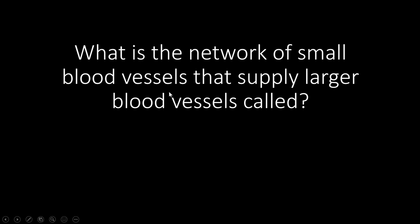What is the network of small blood vessels that supply larger vessels called? Sometimes blood vessels are so big that the tissue surrounding them is too thick for nutrients to diffuse through — it needs its own vessels. That's mainly in places like your heart. Those are called vasa vasorum — meaning 'vessel of vessels' — because some vessels are so big they can't supply all the blood to the tissue around them.